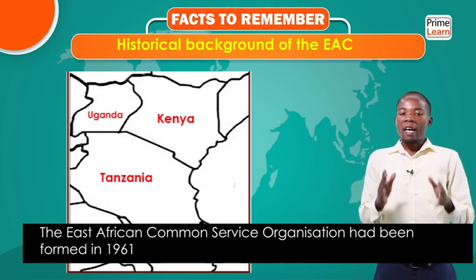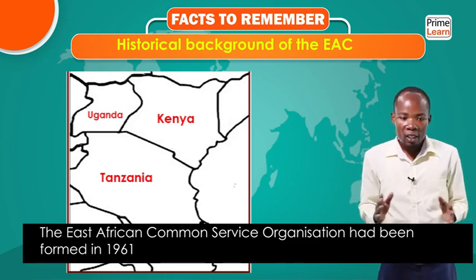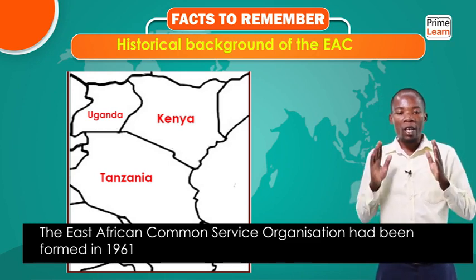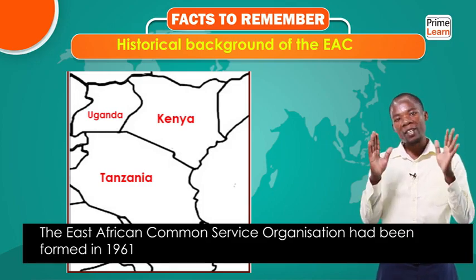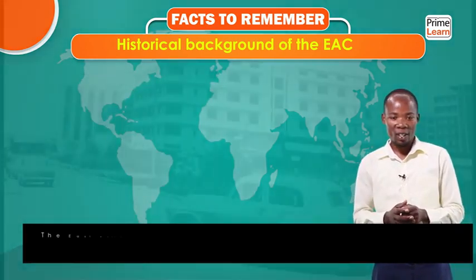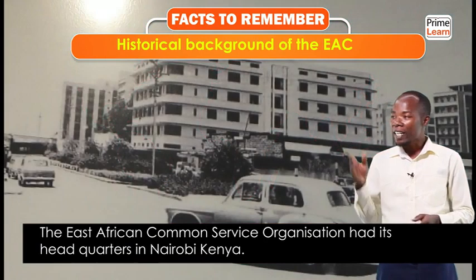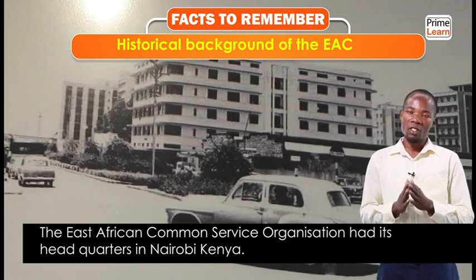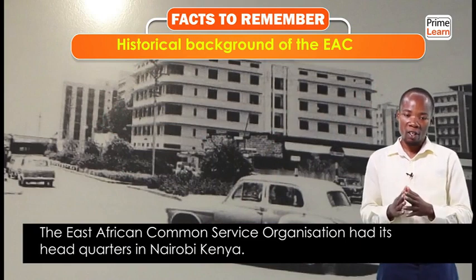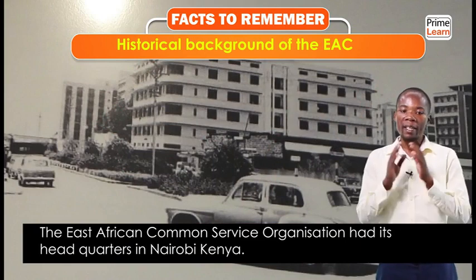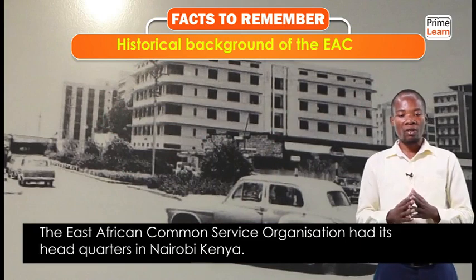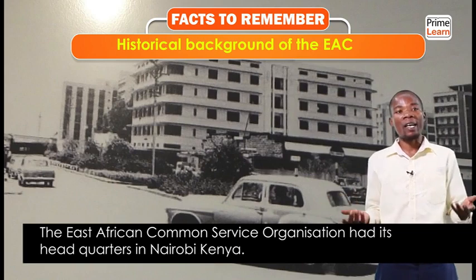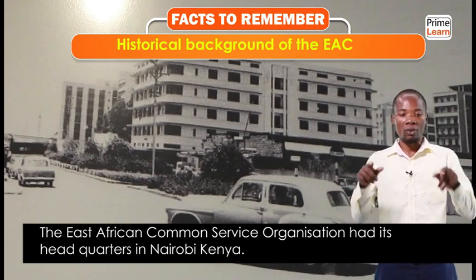The East African Common Services Organization had its headquarters in Nairobi, Kenya — that is the capital city of Kenya. That's where the headquarters of the East African Common Services Organization was located.